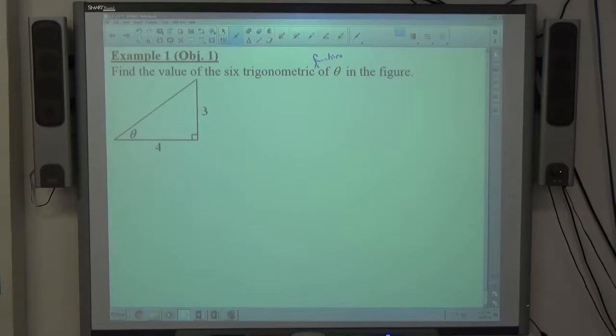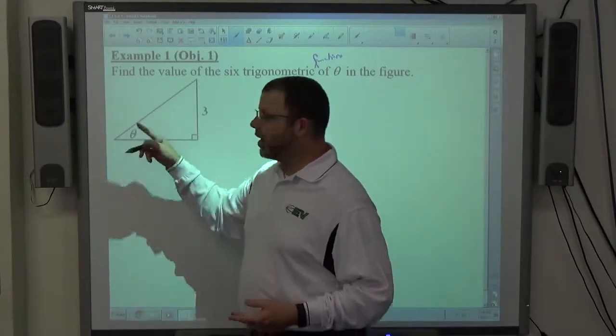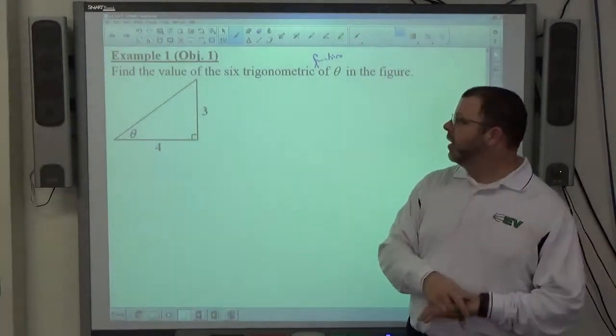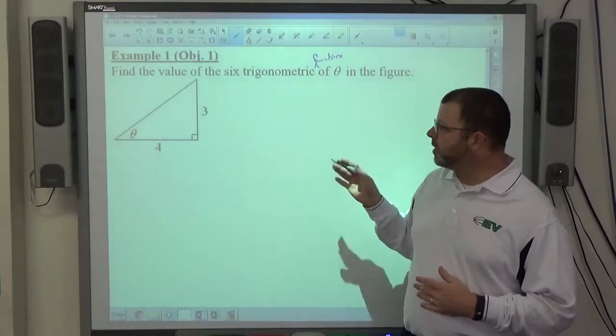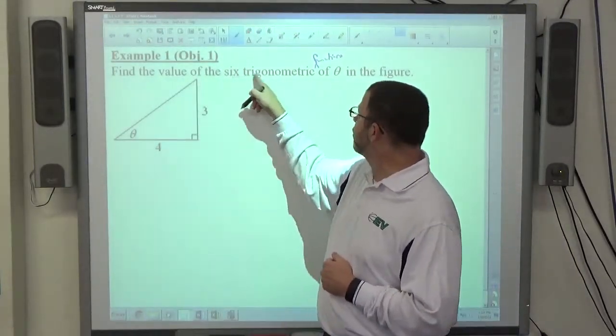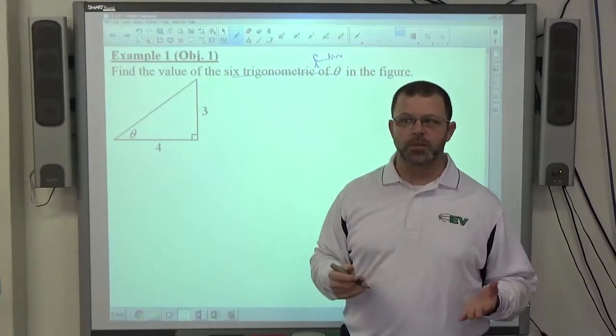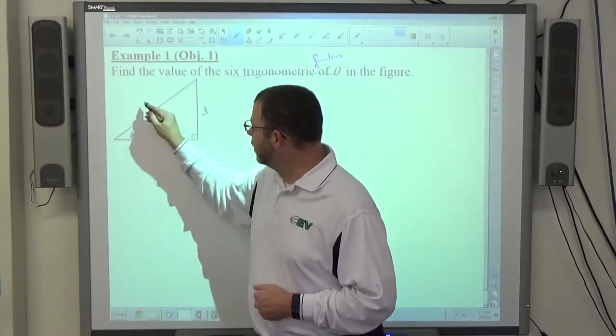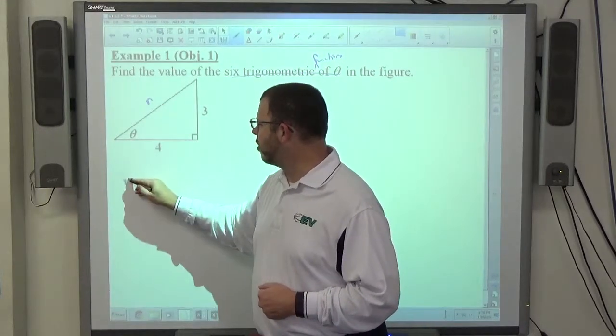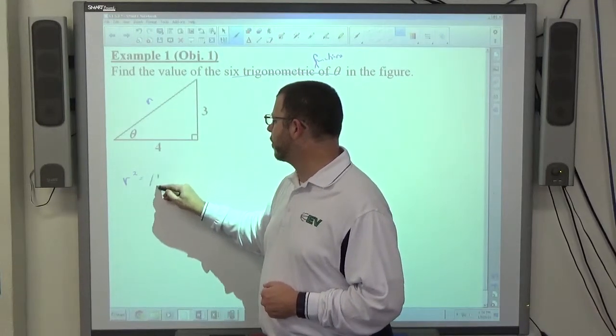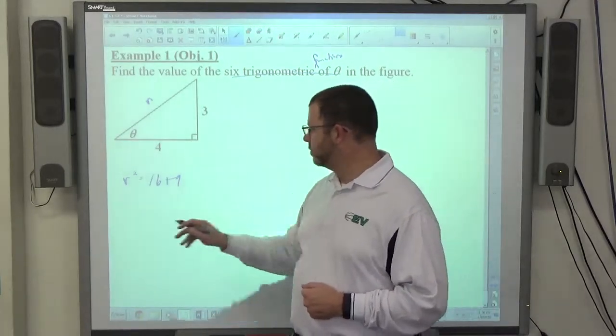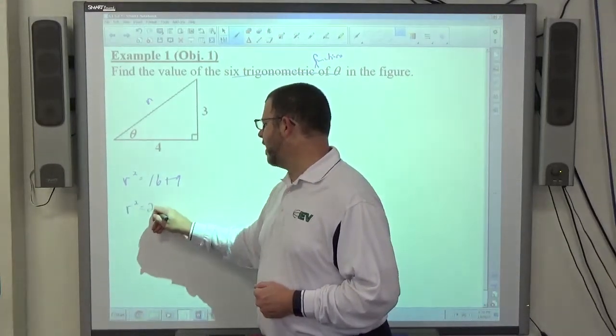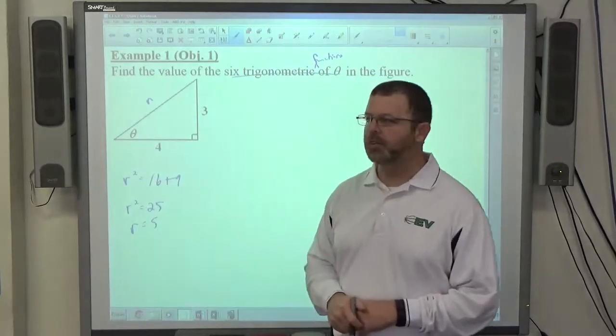All right. So first off, what's missing? Hypotenuse. The theta, obviously we don't know what theta is. We could actually find theta using some trigonometry. But what's missing, if we need to find the value of the six trig functions, we have to know the three sides. The opposite and adjacent are known, but the hypotenuse isn't. So it's a right triangle. If I do r squared is equal to 4 squared plus 3 squared, r squared is equal to 25. Therefore r would equal the square root of 25, which is 5.